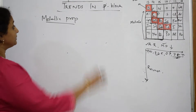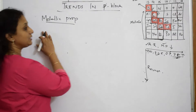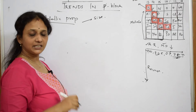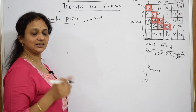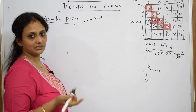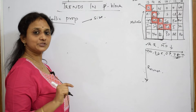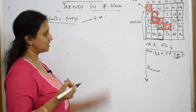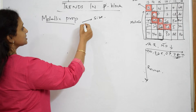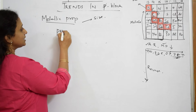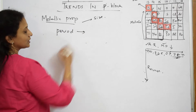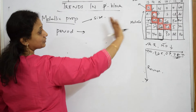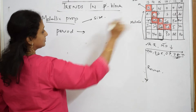Why did I conclude like that? Metallic property basically depends upon the size. If the size is larger, it can easily donate electrons. If the size is smaller, nuclear force of attraction acts on it, and it can't release or donate electrons. Metallic property when I speak in terms of a period, from left to right, metallic property is decreasing.